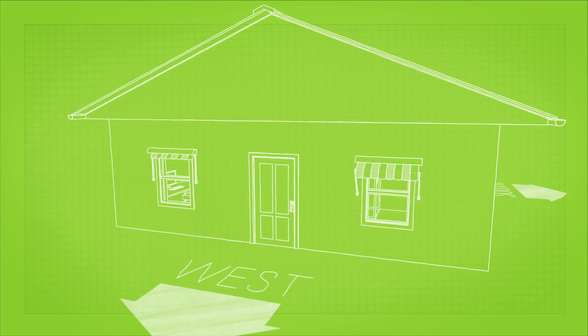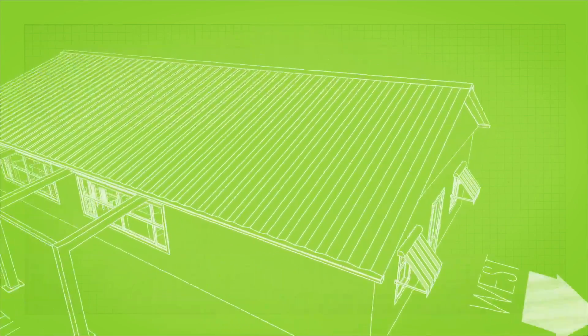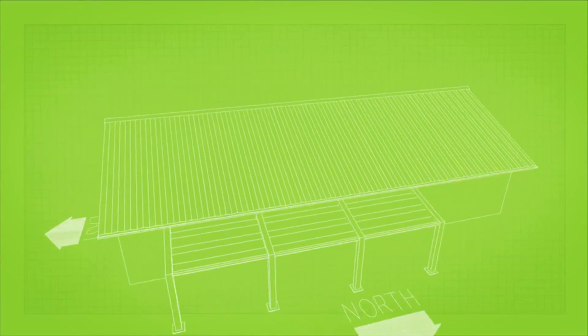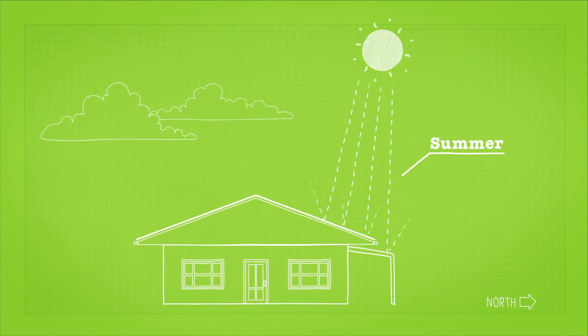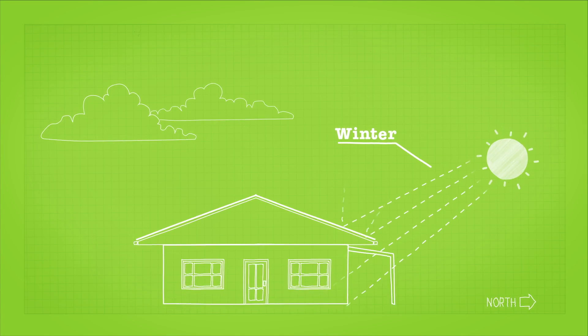In summer, use external blinds, awnings or shutters to shade your east or west windows. For north facing windows, eaves, pergolas or adjustable shades will provide effective protection. And because of the height of the summer sun, the same type of shading will allow the lower winter sun to enter your home in the colder months.